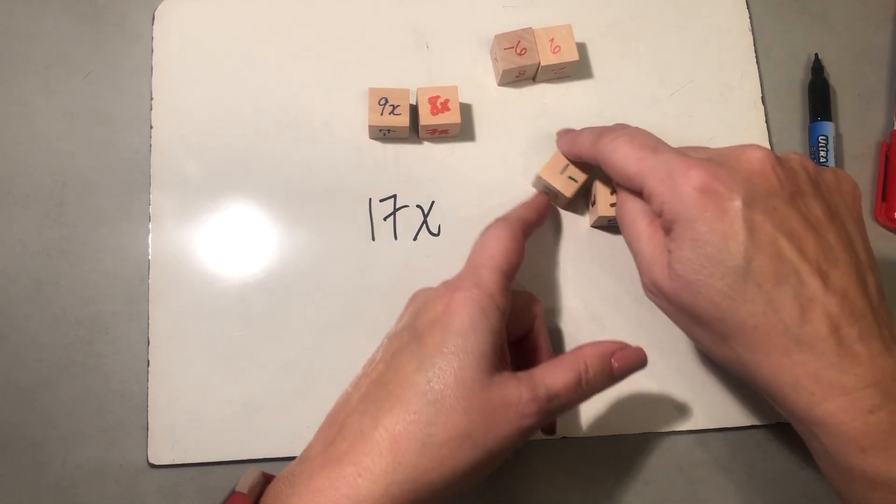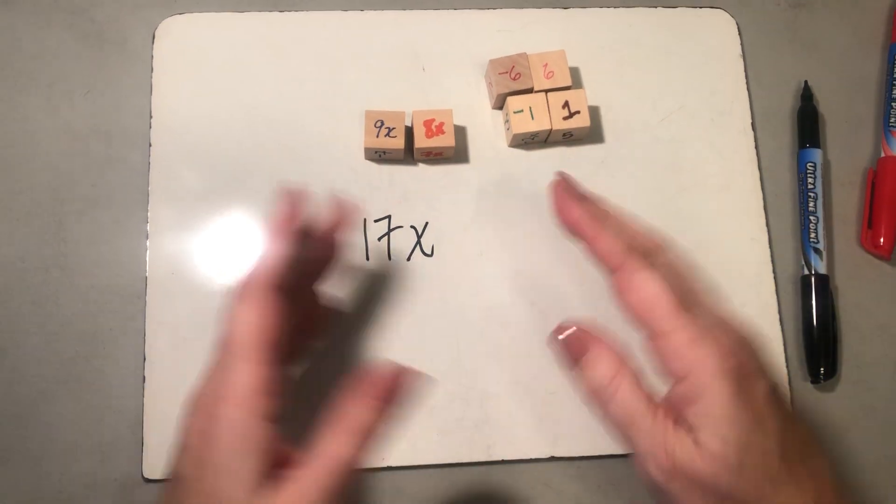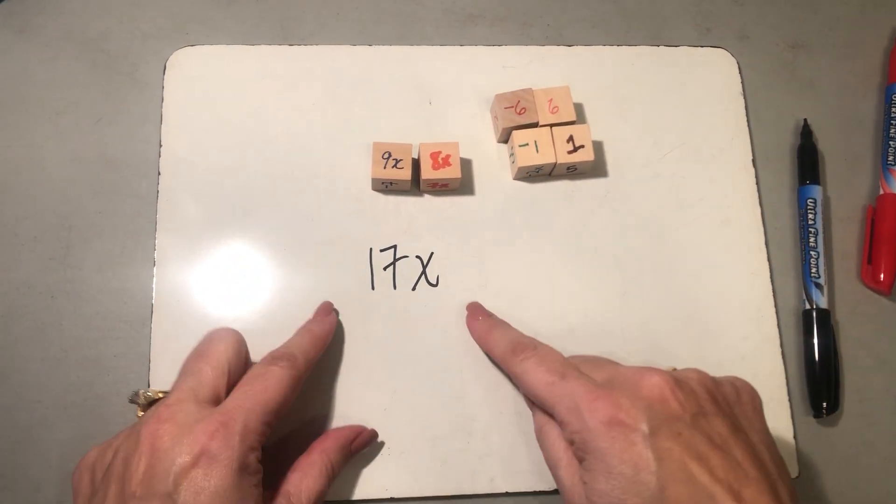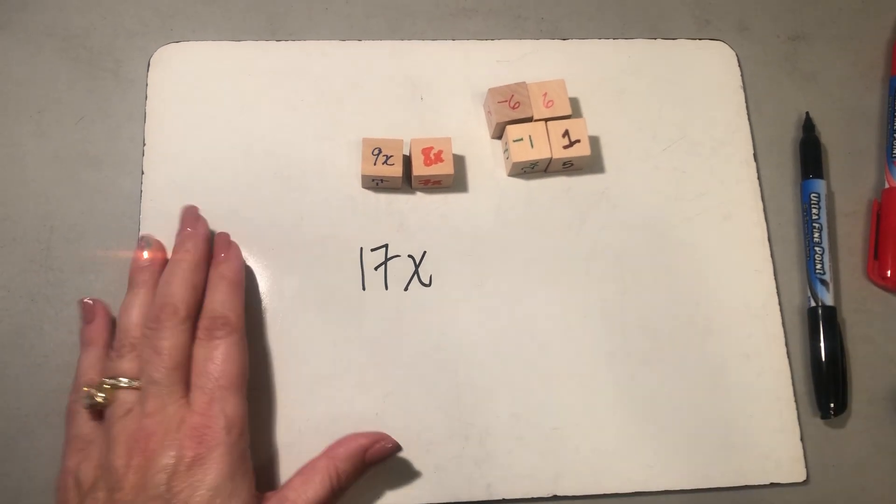We don't need that one. Here's another zero pair. Oops, it goes around that way. Here's another zero pair. So that's zero, so all of these six dice are just going to simplify down to 17x. So let's try another one.